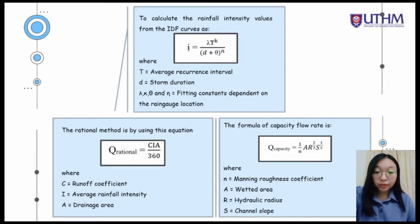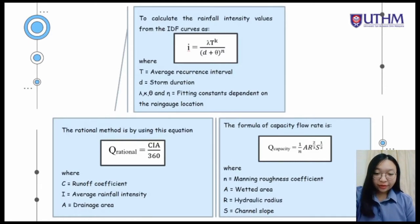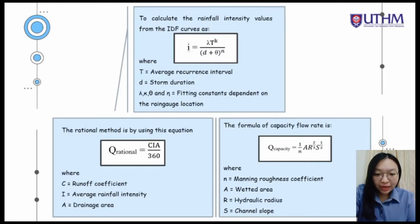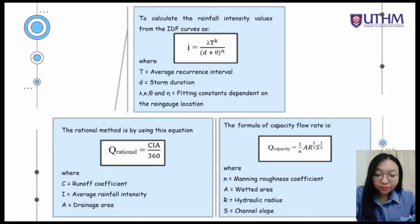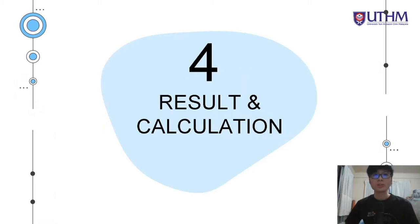The rational method is the most commonly used technique for runoff peak estimation in Malaysia and many parts of the world. It gives satisfactory results for small drainage catchments. The rational flow rate Q rational equals the runoff coefficient times the average rainfall intensity times the drainage area divided by 360. The capacity flow rate formula is 1 over N times A times R to the power of 2/3 times S to the power of 1/2, where N is Manning's roughness coefficient, A is wetted area, R is hydraulic radius, and S is channel slope.